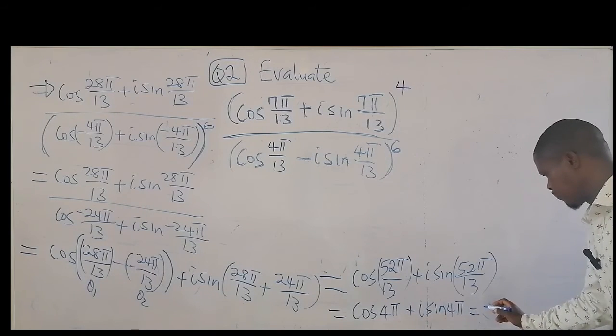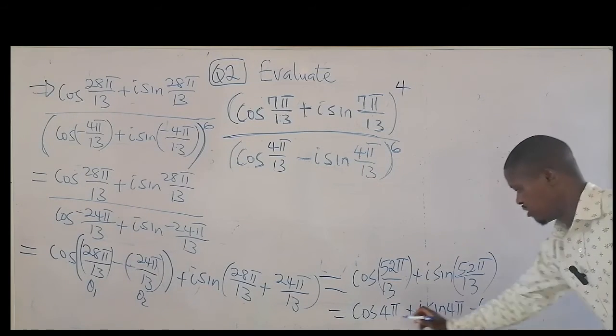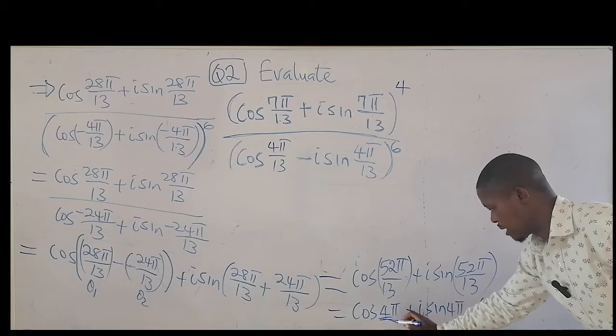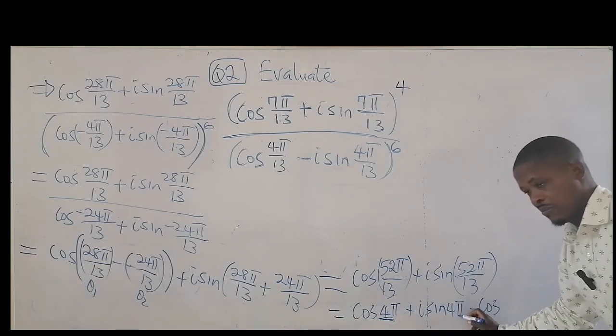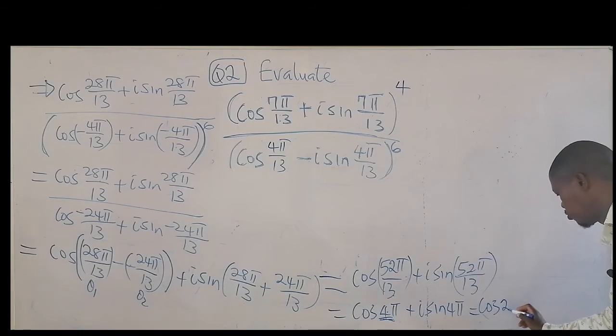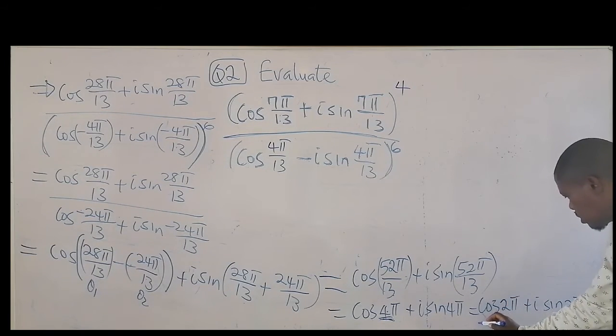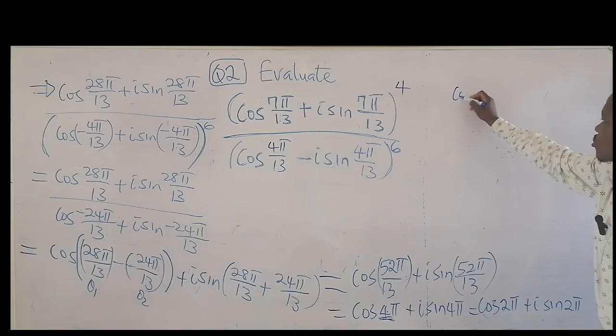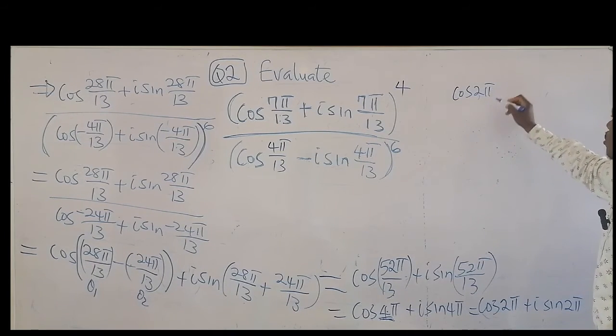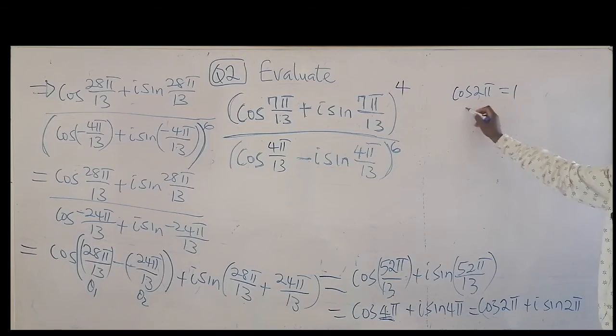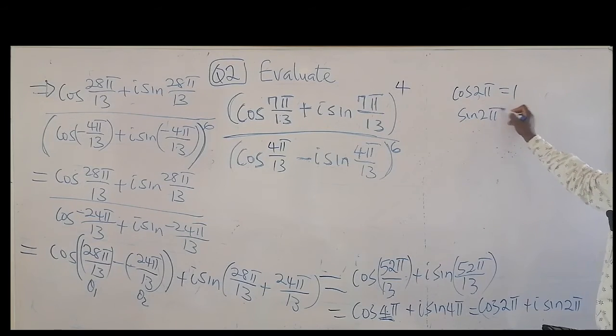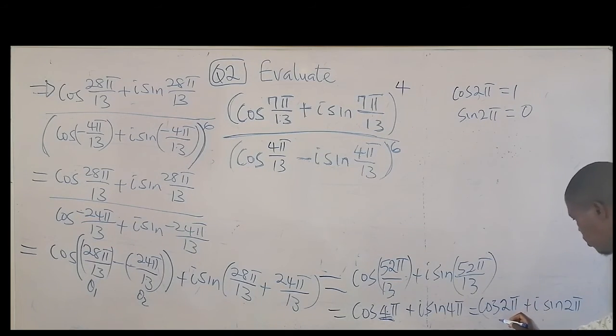And this is equivalent to cosine, you can take away 2 pi from here. The equivalent is cosine 2 pi plus i sine 2 pi, and this will give us cosine 2 pi, which is equal to 1, sine 2 pi is 0. So the answer is 1 plus 0, which is 1.